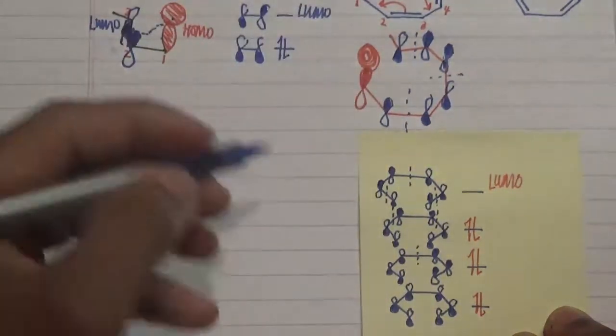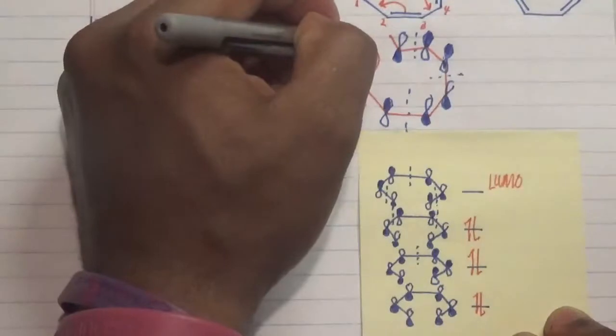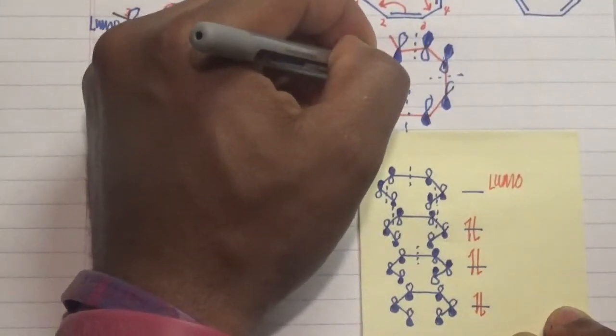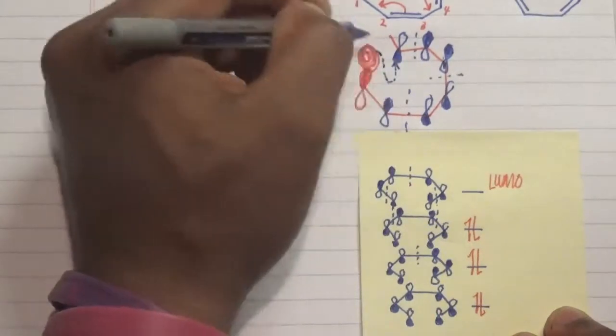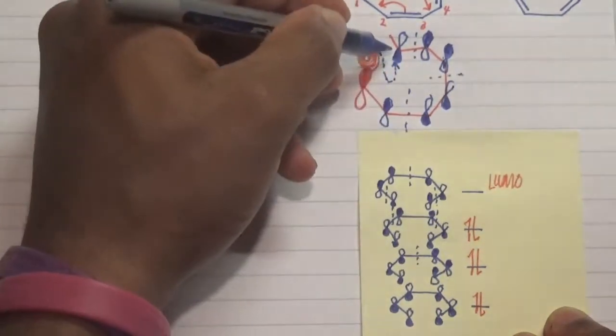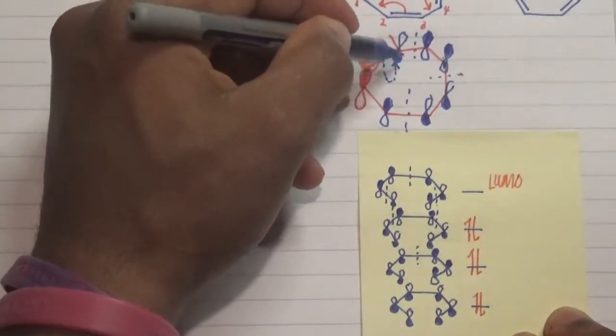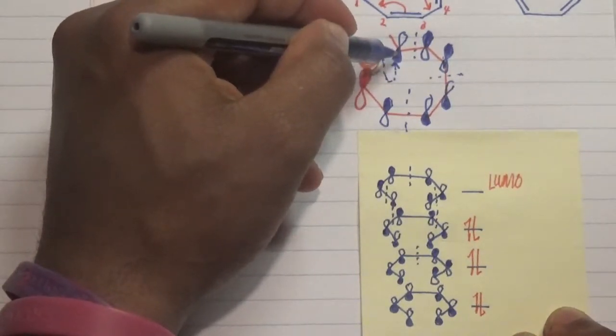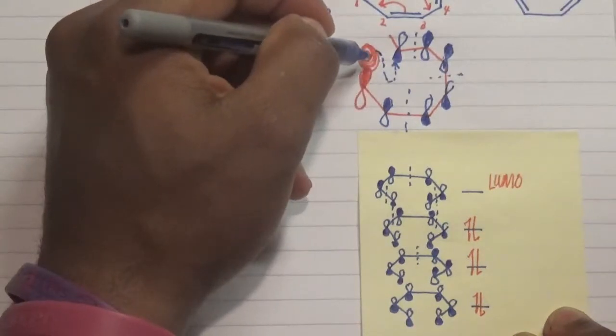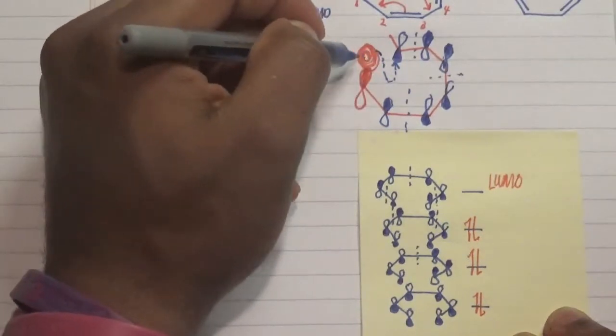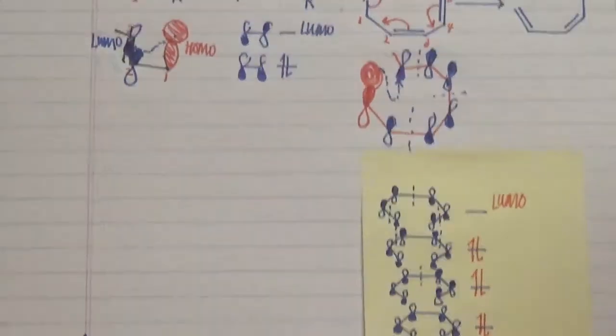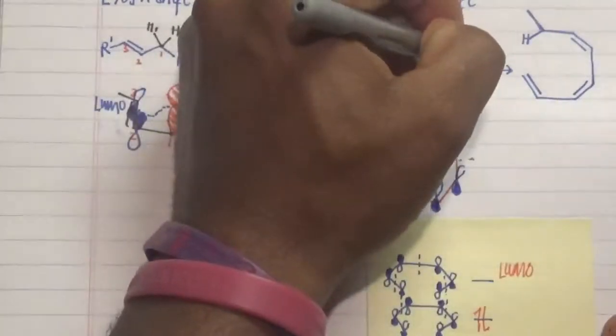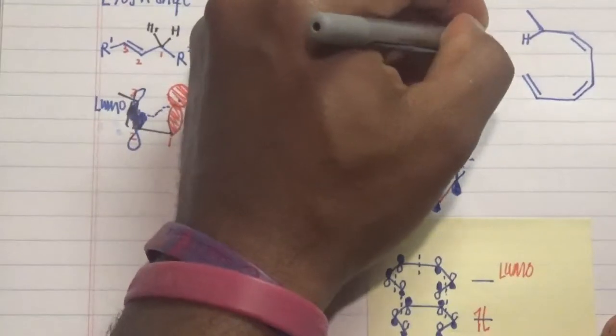So in this particular case, what we have is our 1s orbital in here moving in an antarafacial direction to the carbon 7 here to form our new sigma bond with this becoming now our sp3 carbon overlapping with a 1s orbital of a hydrogen. So this will lead to the formation of our product.